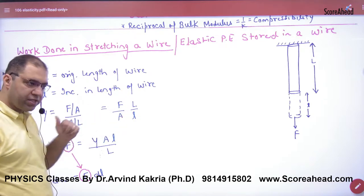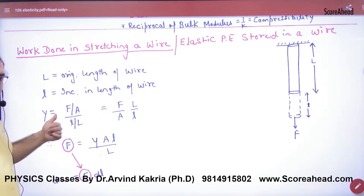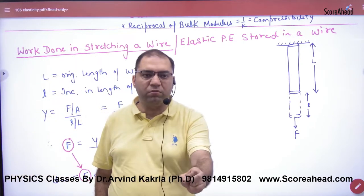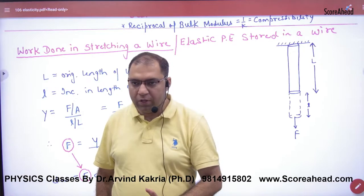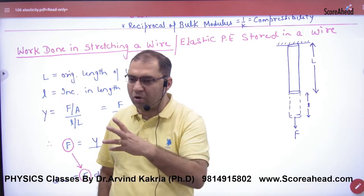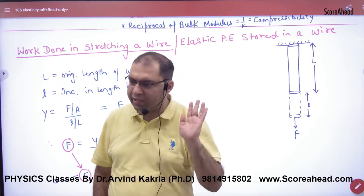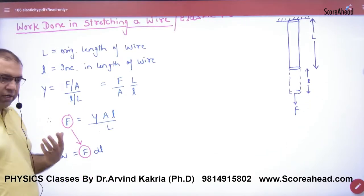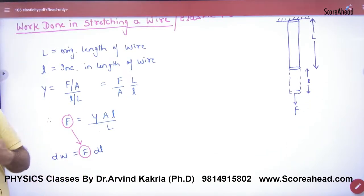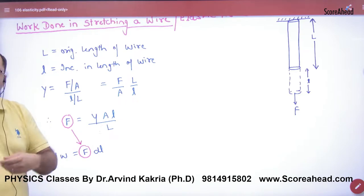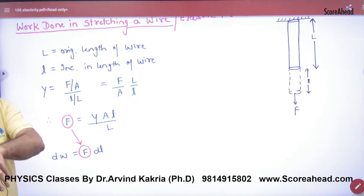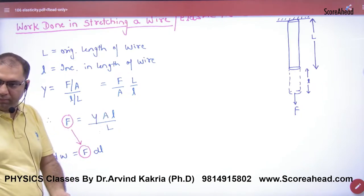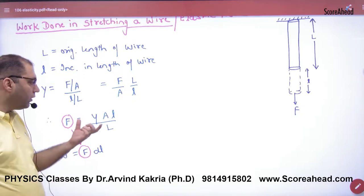Cross-multiplying, we get the force value from Young's Modulus. Young's Modulus depends on the material and is always given in the question — for example, copper, silver, or something else. Y is not dependent on the length; Y is always constant for any given material. So if Y is more, I have to apply more force, and if Y is less, I have to apply less force.